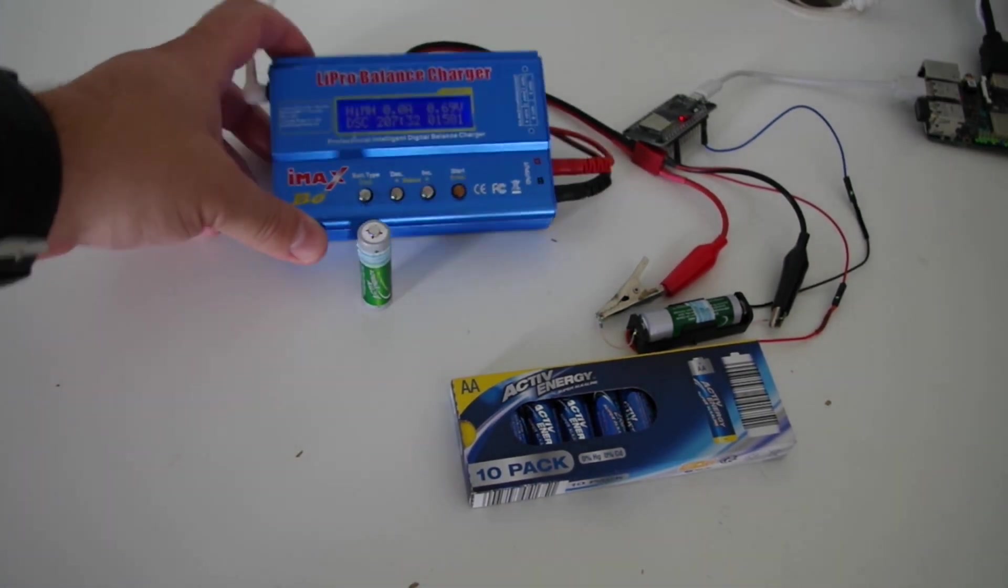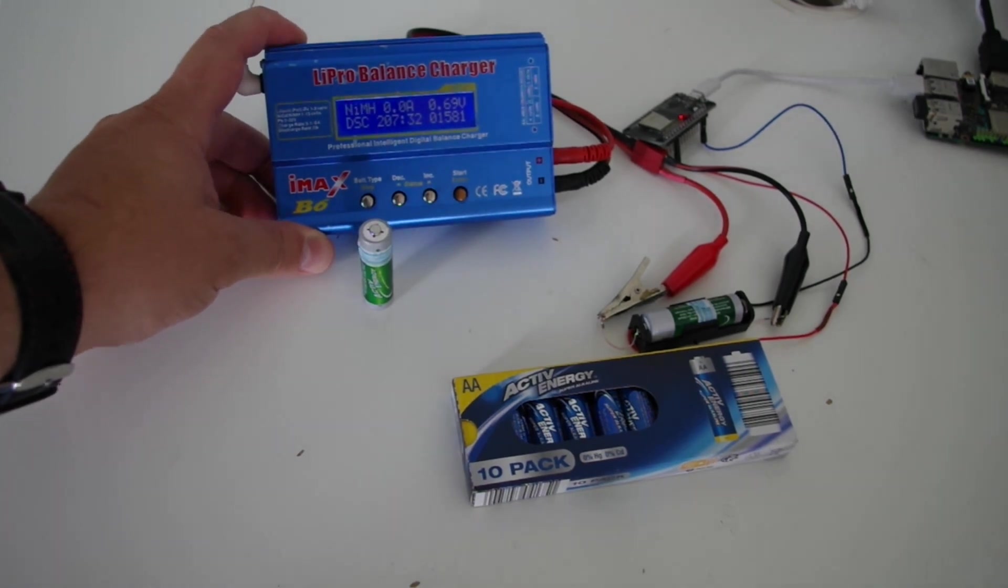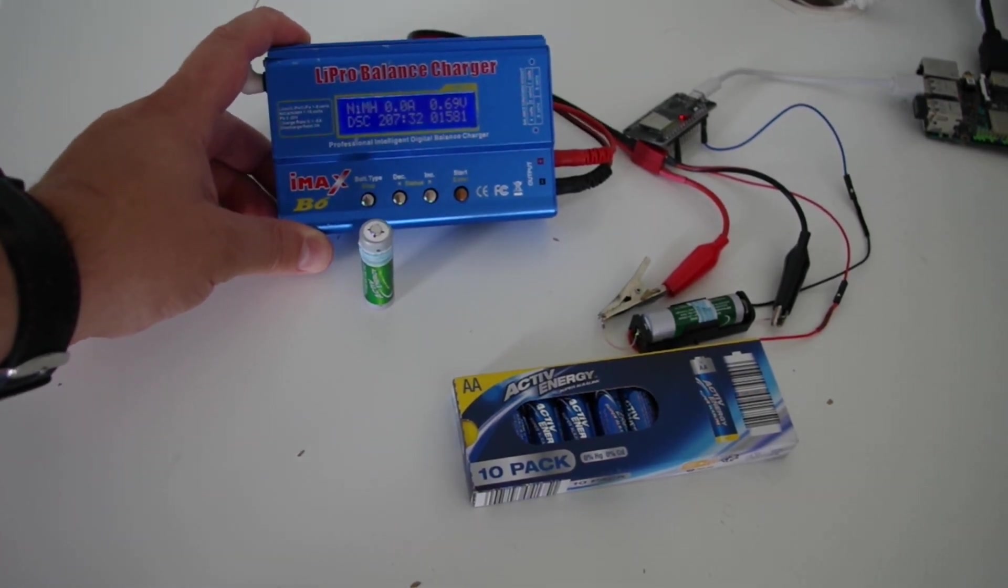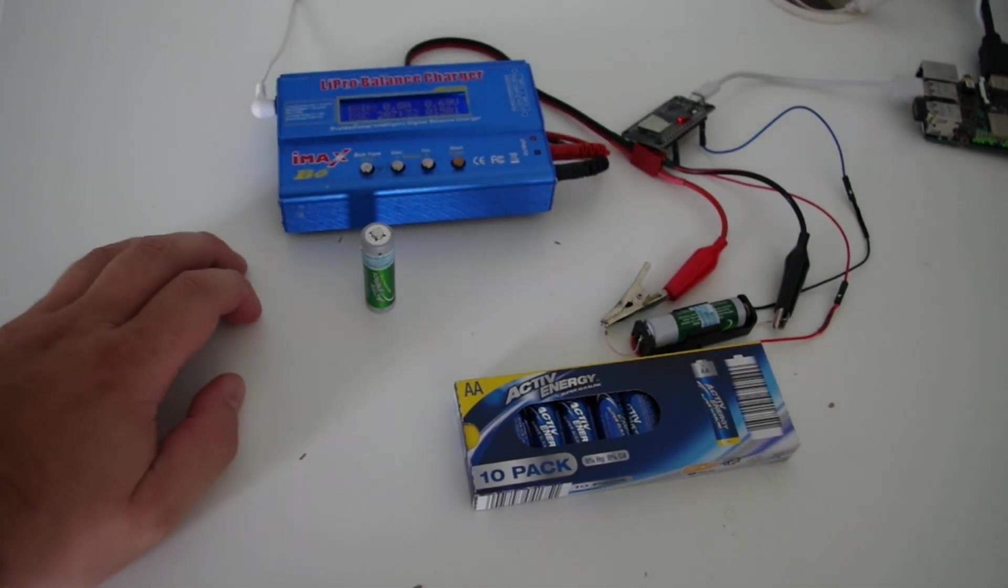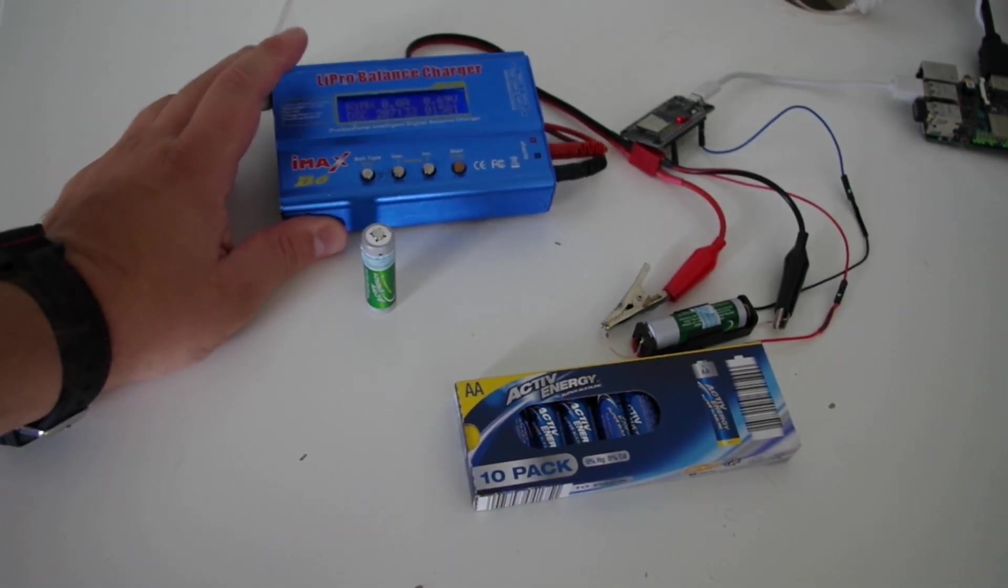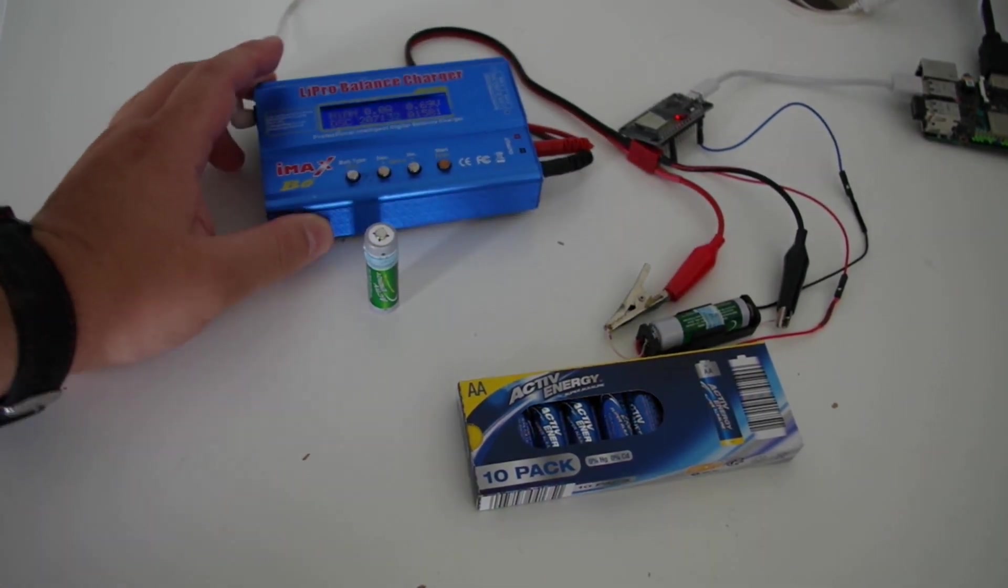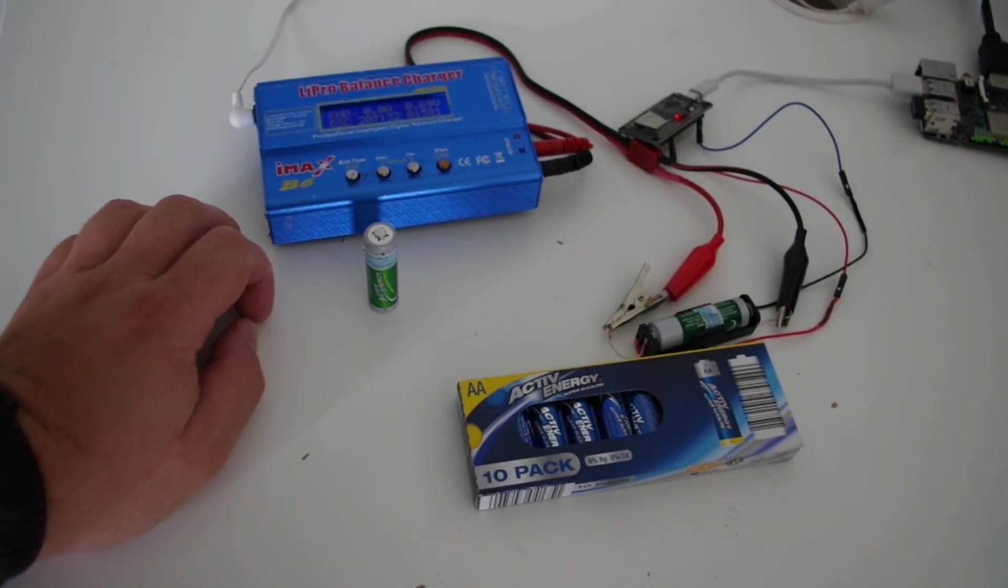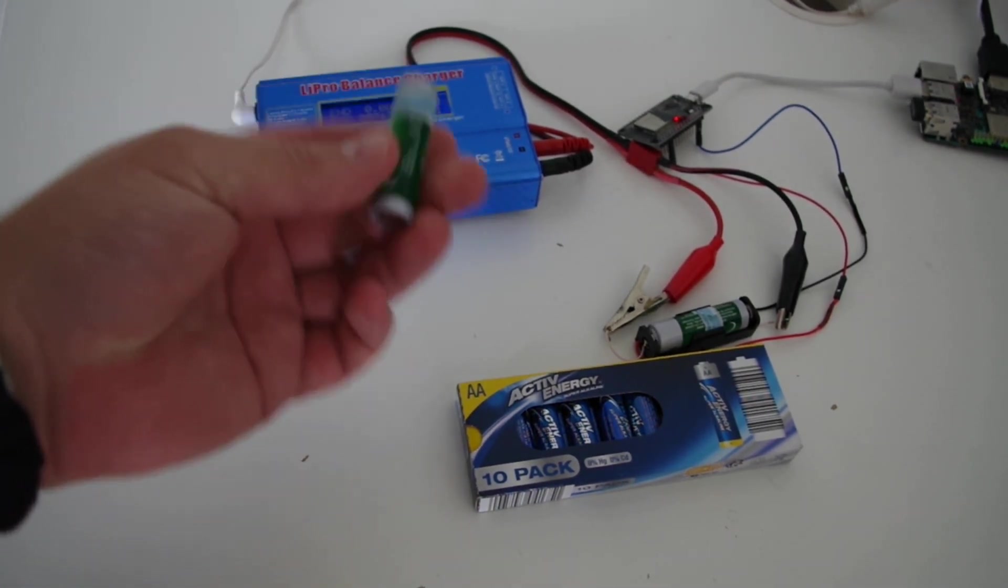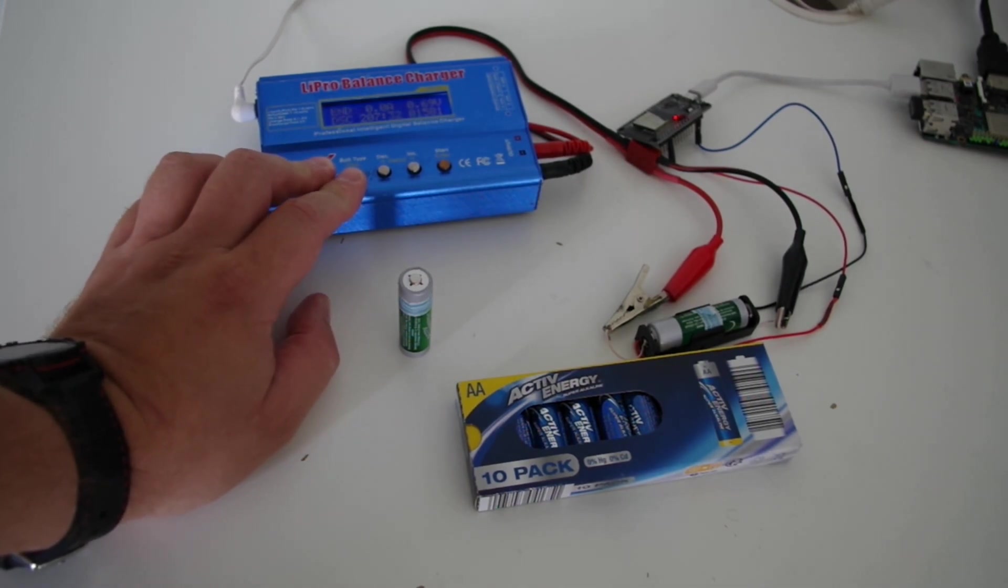0.5 amp discharge is finished and as you can see capacity is quite low, only 1.5 amp hours. Maybe this happens because IMAX turns off this discharge too early because we have long wires and significant voltage drop. So we will check last one with different cutoff voltage.